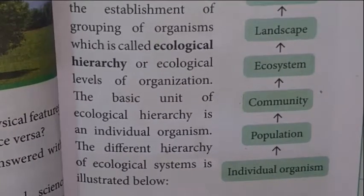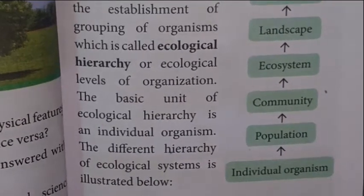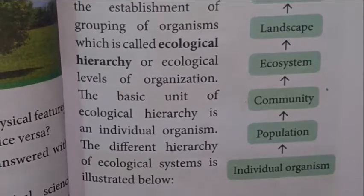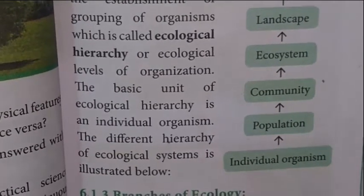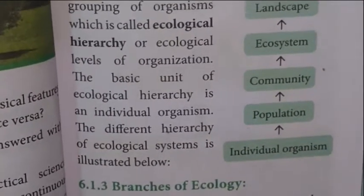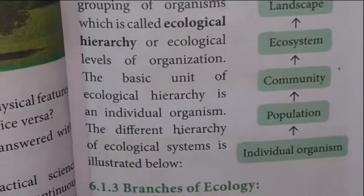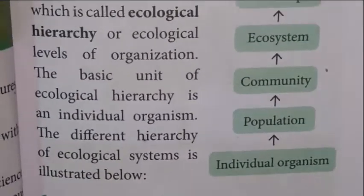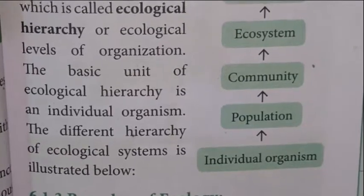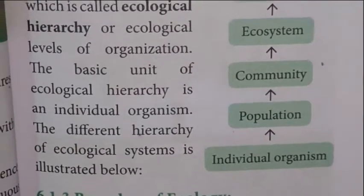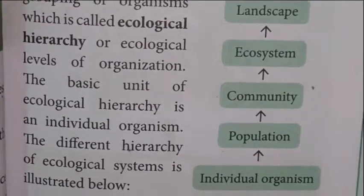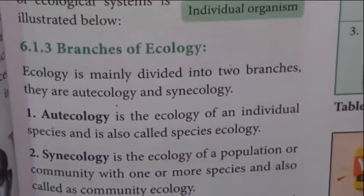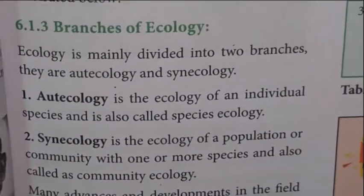The basic unit of ecological hierarchy is an individual organism. Individual organisms group together to make a population, many populations make a community, and communities make an ecosystem, then landscape, biome, and biosphere.